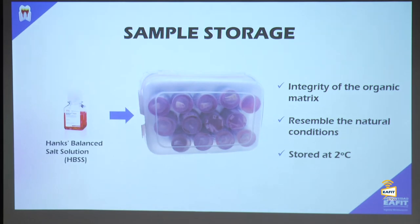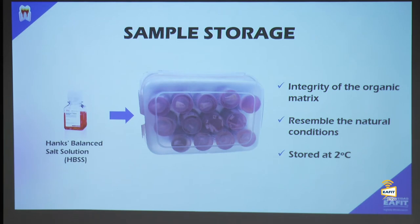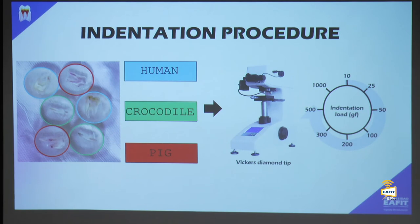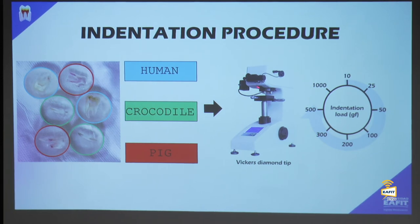To preserve the organic matrix, samples were immersed in fluids that maintain the tissue in vitro, resembling natural conditions, and frozen at two degrees Celsius to slow down organic matrix loss. The physical specimens were cut in half and embedded in cold-cured epoxy — green for crocodile, red for pig, blue for human. Samples were fixed on a small steel plate and loaded into the indenter, which steps from 10 grams force to 1000 grams force.